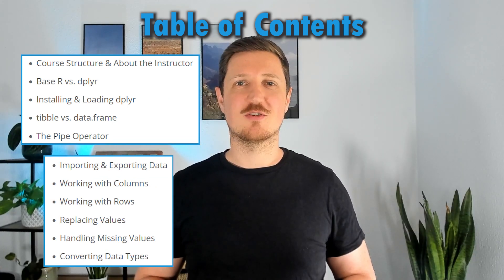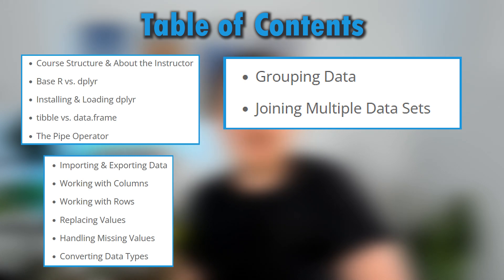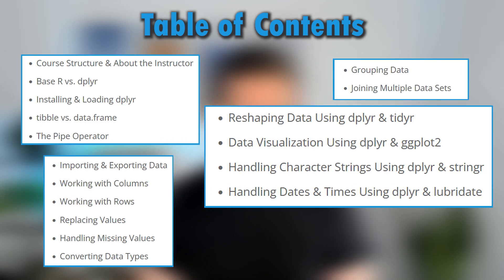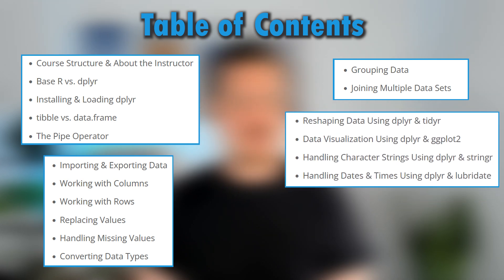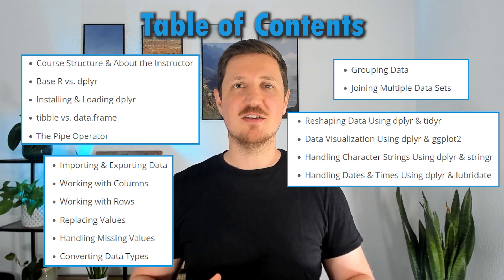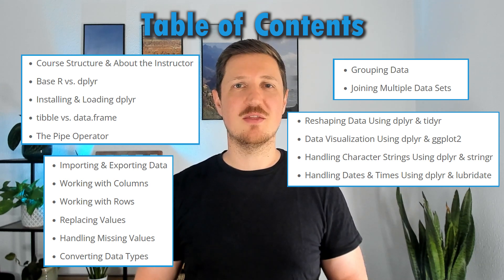We then look at data grouping and merging. I explain the different types of SQL joins and show the advantages and disadvantages of such data concatenations. We will then combine dplyr with functions of other Tidyverse packages, including tidyr for transforming your data, ggplot2 for data visualization, stringr for handling character strings, and lubridate for handling dates and times. This course doesn't just teach you about dplyr and its data manipulation features — you'll also get a brief overview of the other Tidyverse packages and how to combine them with dplyr.